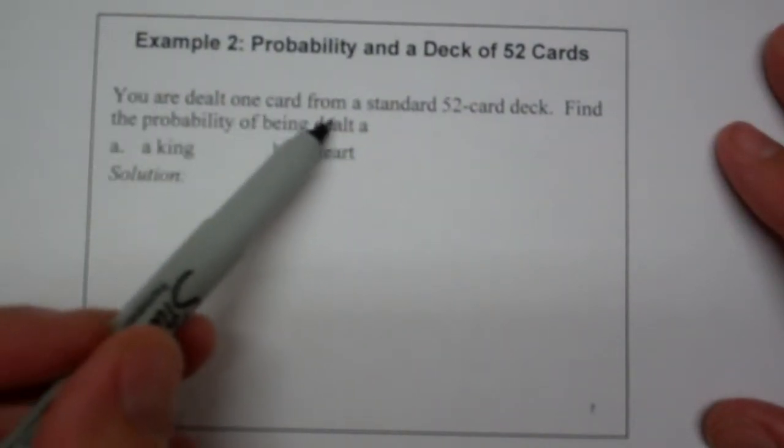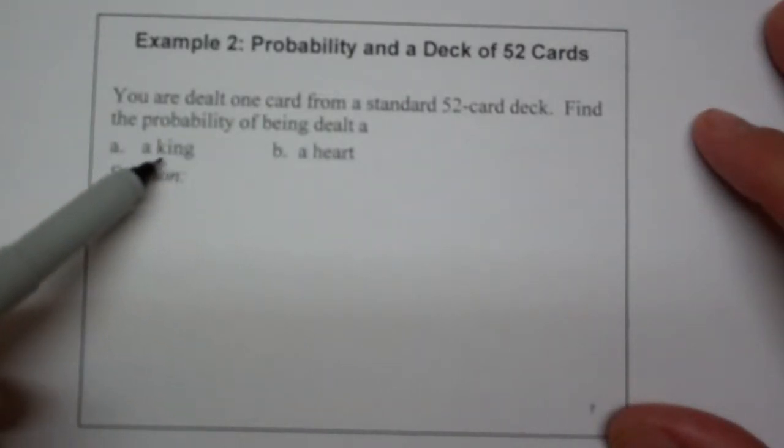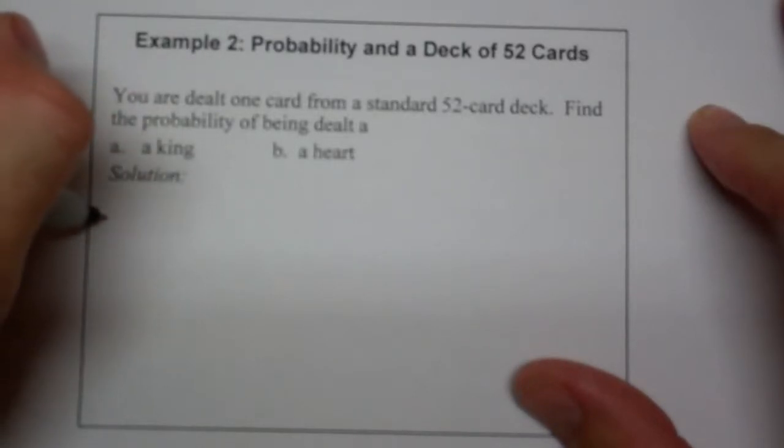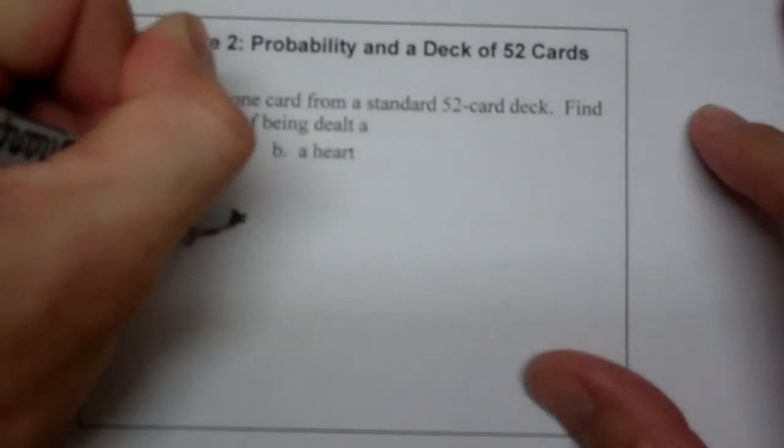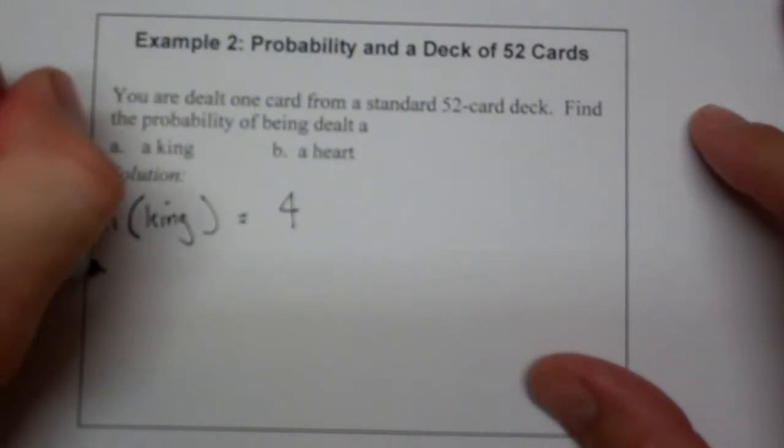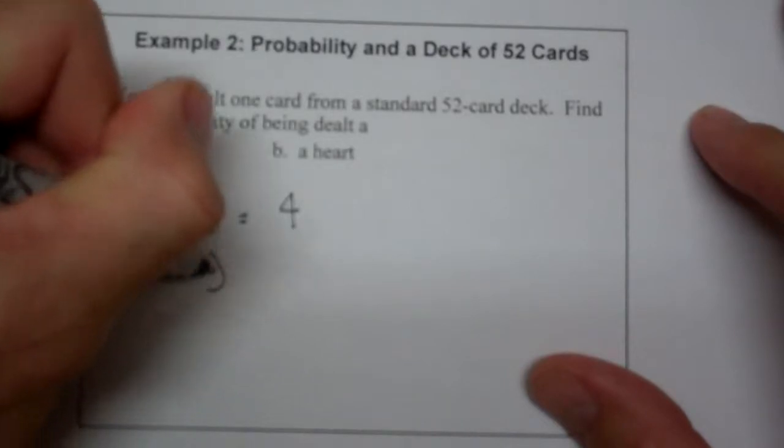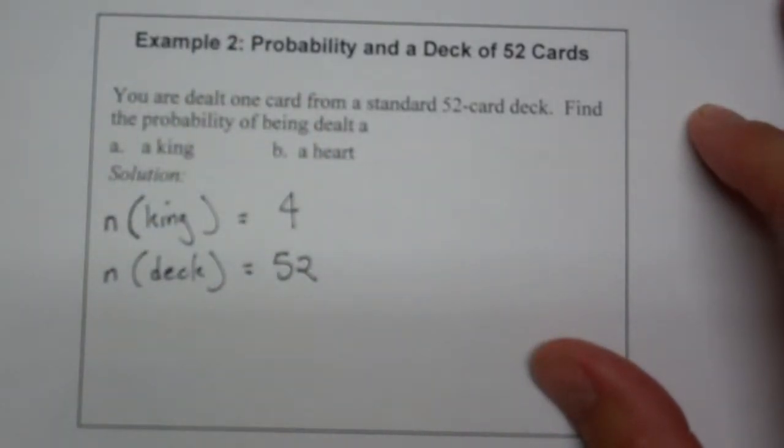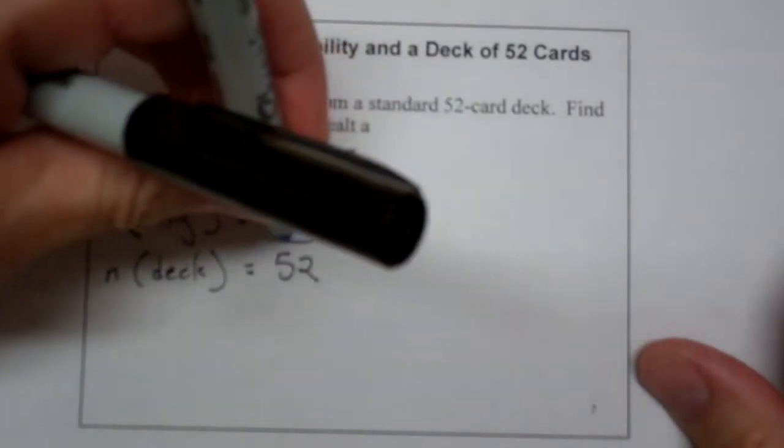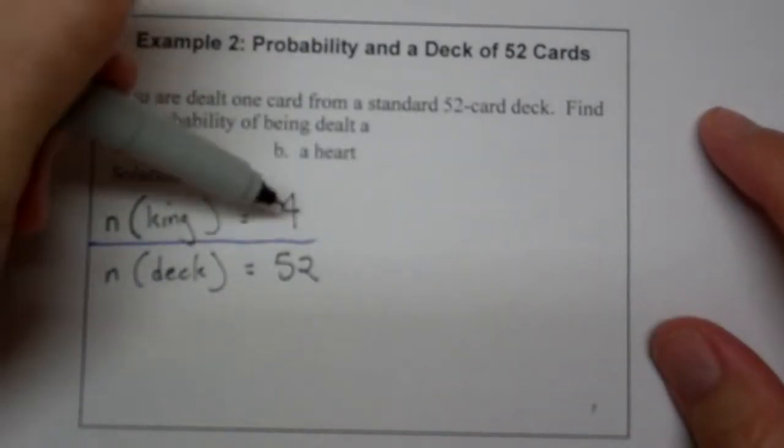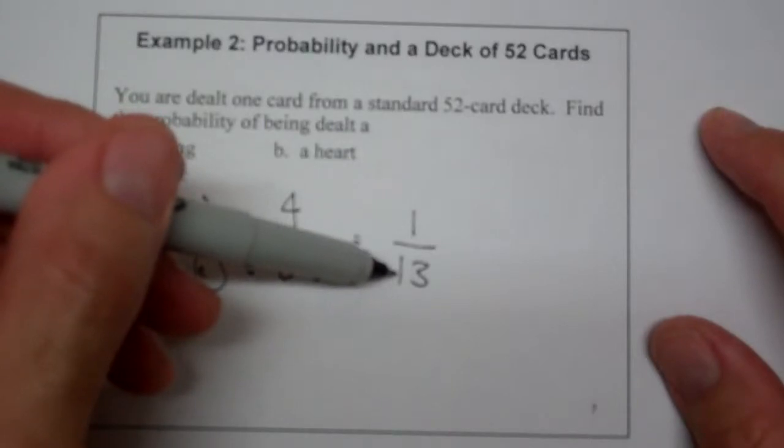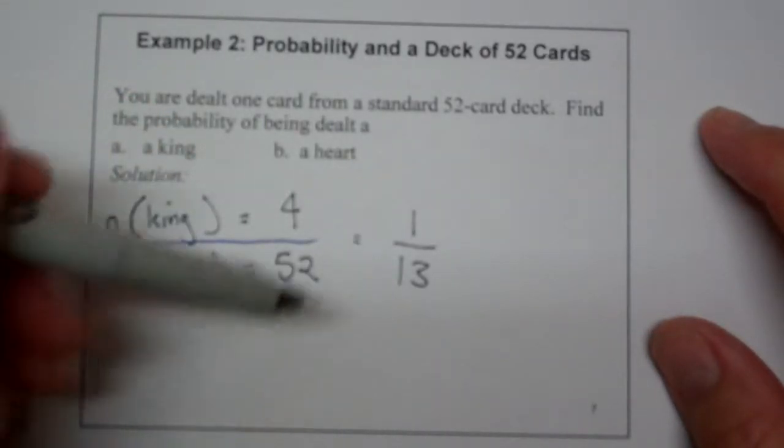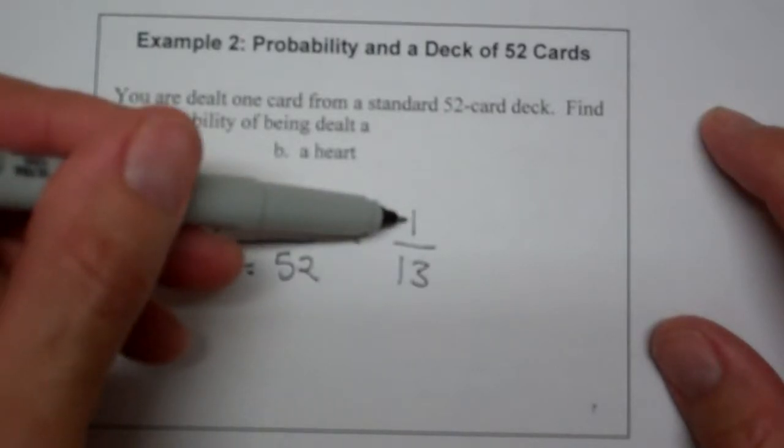Now, what if you are dealt one card from a standard 52-card deck? Find the probability of being dealt a king. Now, I am not going to list this, but I'm going to say the cardinal number of the event of a king is going to be four. Basically, there are four kings in a deck. They already told us that the deck has 52 cards in it. So basically, all I have to do is, according to my principle, is divide that like a fraction, and it turns out that four goes into 52 thirteen times. I want you to think about this. There are 13 cards in a suit, and one of them is a king. So basically, this is one out of every 13 cards is a king, because there is one king in every suit. So again, this makes sense, and that makes me happy.